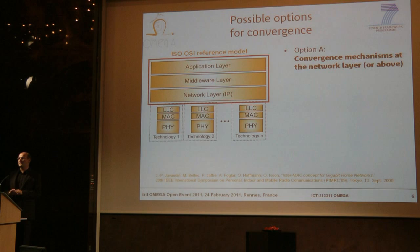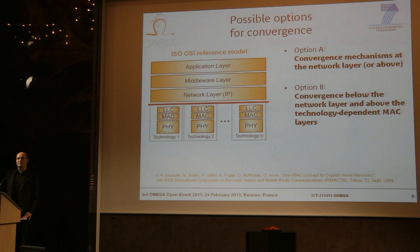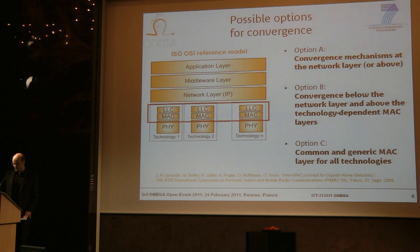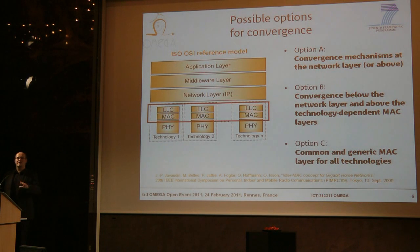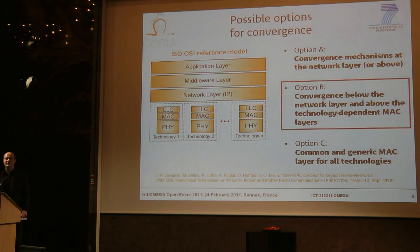Secondly, option B could be convergence below the network layer and above the technology-dependent MAC layer. This could be a compromise between complexity and performance, because we are just on the border between technology-dependent and technology-independent parts within the protocol stack. Finally, there is a third option: a common or generic MAC layer for all technologies. As you know, different technologies come with different MAC layers, and it would be a very tough task to harmonize all these technologies. Besides, the MAC layer should exploit the conditions at the physical medium and so it has to be designed for a specific technology. So in the Omega project, we decided to go for option B — a compromise between complexity and performance.